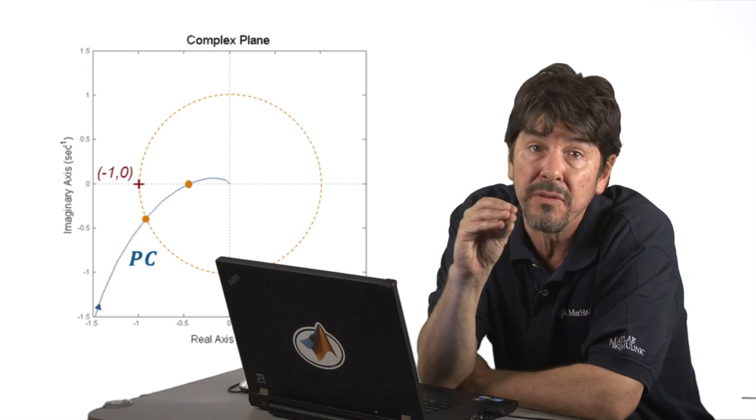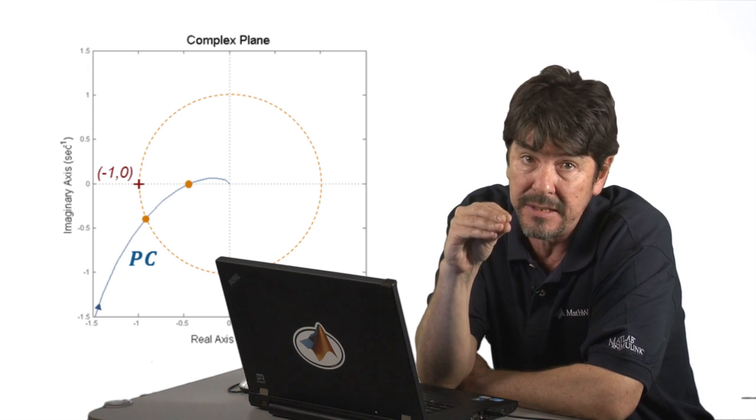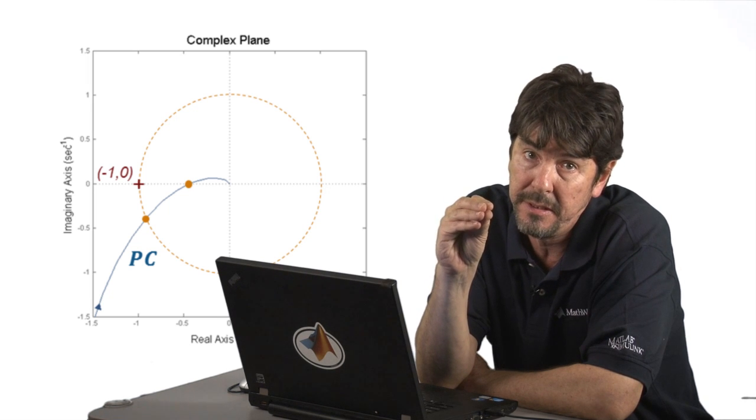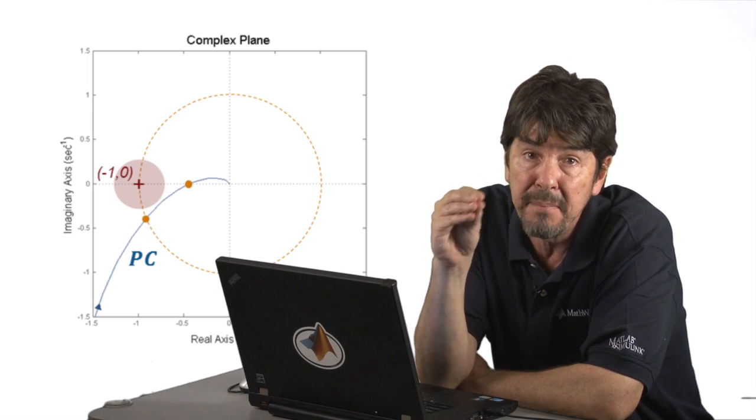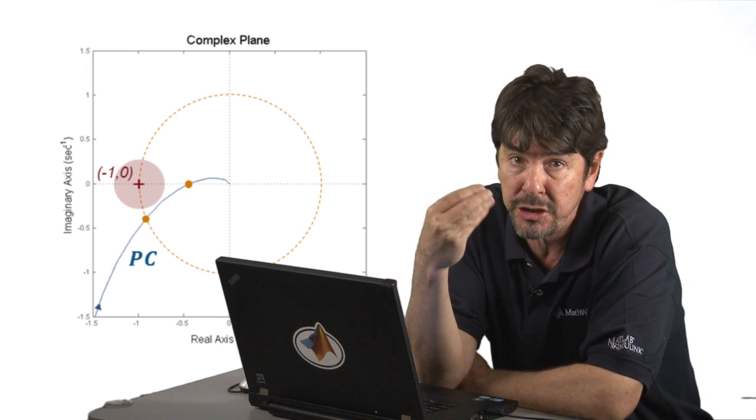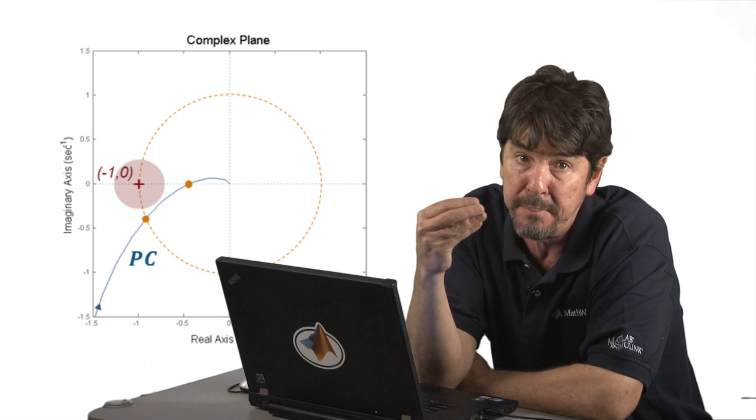We obviously do not want both of these to be the same, because that would mean that we are on top of that minus 1 comma 0 point. So the stability margins we are looking for are akin to defining a safety region that ensures we are far enough away from that point.